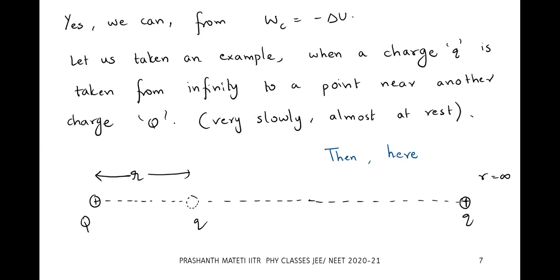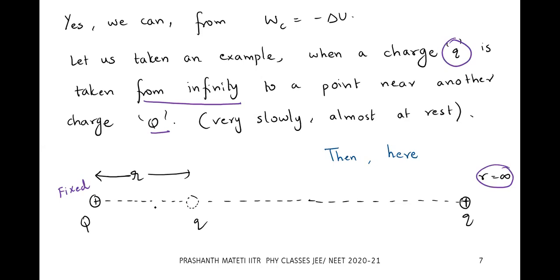Let us derive a general formula. We take a charge q and bring it from infinity to a point near another fixed charge. The source charge is fixed so it does not move. Charge q starts from infinity and is brought to a final position r.